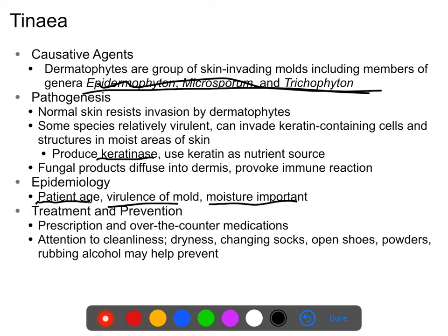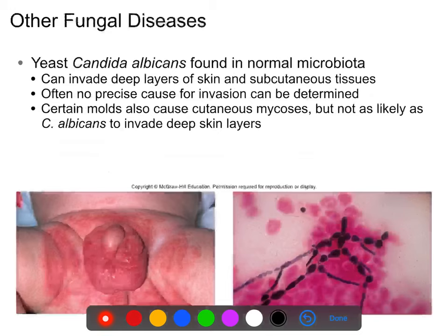For treatment and prevention, there are prescription antifungals — particularly antifungal creams that work quite well — as well as over-the-counter antifungals. There are also powders that dry out the area, and usually if you dry out the area it will go away on its own. Prevention includes keeping areas clean and dry, changing socks regularly, wearing open shoes, and possibly using rubbing alcohol, though rubbing alcohol can dry out the skin and cause other issues.